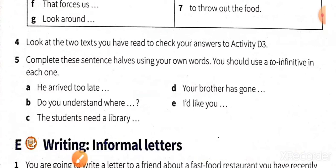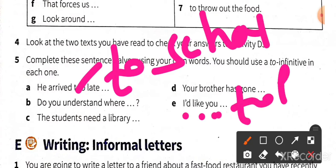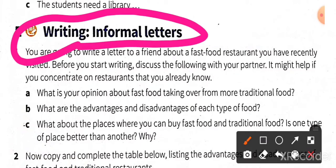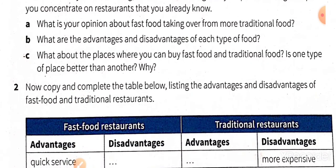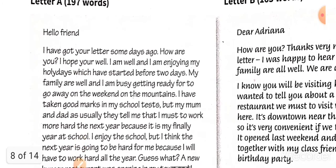Check the answers. 'He arrived too late to school — you have to add something.' 'I would like you to play.' 'Your brother has come to school.' Writing an informal letter: informal means writing to a relative or a friend, not to someone in an office. You have to write an informal letter about the fast food tradition. This is how you're going to write that letter.